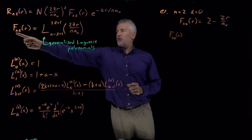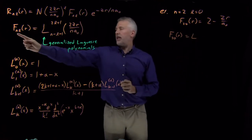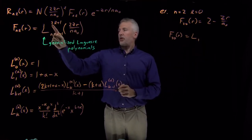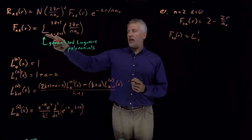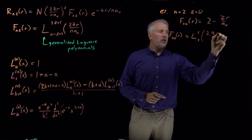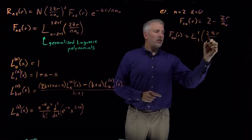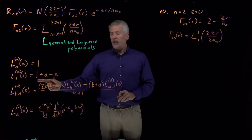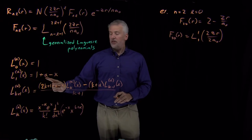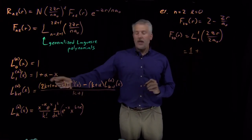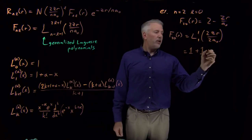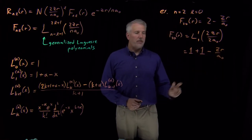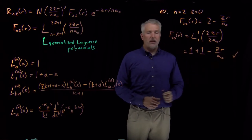The f_{2,0} polynomial is a Laguerre polynomial with n equals 2 and l equals 0. Plugging in: 2 minus 0 minus 1 gives subscript 1, and 2l plus 1 gives superscript 1. The argument is 2zr over n·a-naught, which with n equals 2 is just zr over a-naught. So L_1^1 equals 1 plus alpha minus x. With alpha equals 1 and x equals 2zr over 2a-naught equals zr over a-naught, this gives 2 minus zr over a-naught — exactly what we saw previously.